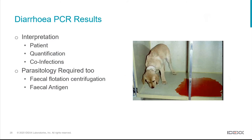If a patient has diarrhoea significant enough to warrant a PCR, parasitology should be performed as well — both flotation centrifugation and the antigen test together. The antigen test answers whether the patient has hookworm, whipworm, or roundworm. The flotation centrifugation provides additional information such as Giardia cysts, or in younger animals, findings like Isospora or coccidia that may need treatment. Combining these tests is really important when running a diarrhoea PCR.